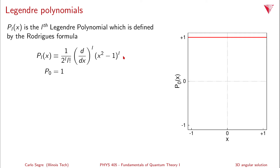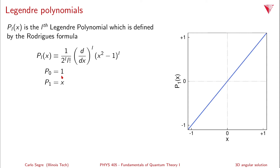Let's compute these for each integer value of L. For L=0, the derivative disappears — 2⁰=1, 0!=1 — so P₀=1. For L=1, we have (1/2) times the first derivative of (x²−1)¹. The first derivative gives 2x, the 2 cancels the 1/2, and we get P₁=x. These are plotted: P₀ is a constant 1, and P₁ is just x.